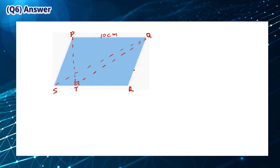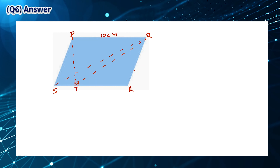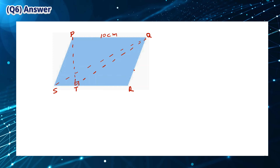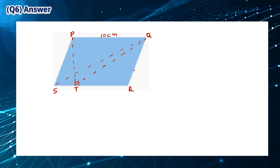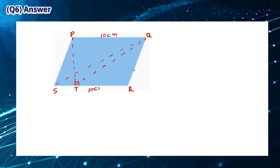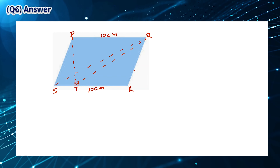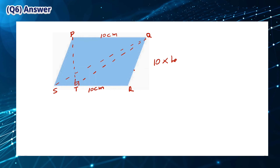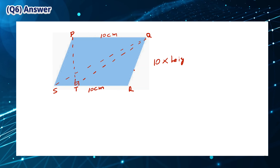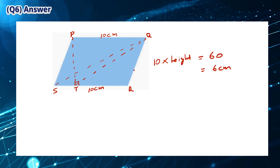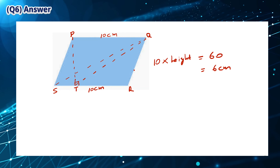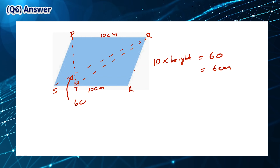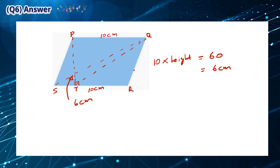To find the area of a parallelogram, we have to multiply the base by its height, which is measured by a perpendicular line. PQ, which is the base, is 10 cm, which means that the height is 6 cm. The only perpendicular line in the diagram is PT, which means that the answer is D.